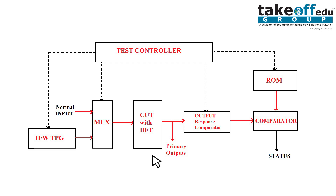This Circuit Under Test can be any design you work with — it may be a combinational circuit or a sequential circuit, whatever it may be. You have to test it with some input patterns. Normally in simulation you force constants online, but BIST is offline testing because here the test patterns are generated by a hardware test pattern generator.